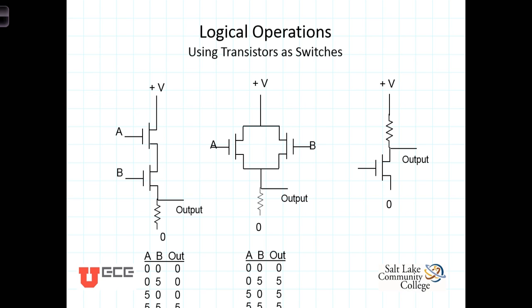Transistors can also be used as switches, and it's a very common application. In the lab this week we're going to use a transistor to control a motor — to turn it off and on — and we're also going to be building up a number of logic gates. A common application of transistors as switches is in digital logic circuitry. Here we're looking at metal oxide semiconductor, or MOS, technology, to show how you can implement digital logic operations using transistors.